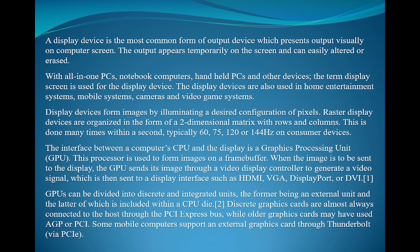Display devices are also used in home entertainment systems, mobile systems, cameras, and video game systems. Display devices form images by illuminating a desired configuration of pixels. They are organized in the form of a two-dimensional matrix with rows and columns. This is done many times per second, typically at 60, 75, 120, or 144 Hz on consumer devices. The interface between a computer CPU and the display is a graphics processing unit. This processor is used to form images in a frame buffer. When the image is to be sent to the display, the CPU sends it through a video display controller to generate a video signal, which is then sent to a display interface such as HDMI, VGA, DisplayPort, or DVI.